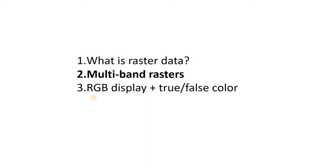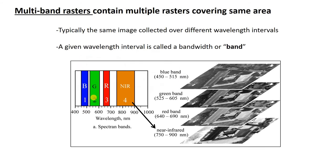Now let's move on to multi-band rasters. Multi-band rasters are a single file that contains multiple rasters covering the same area. The most common example is an image or photograph that covers the exact same area of the ground, but each separate raster or band is collected in a different wavelength of light. That's actually where the name band comes from — band is short for bandwidth, which refers to a wavelength interval of light.